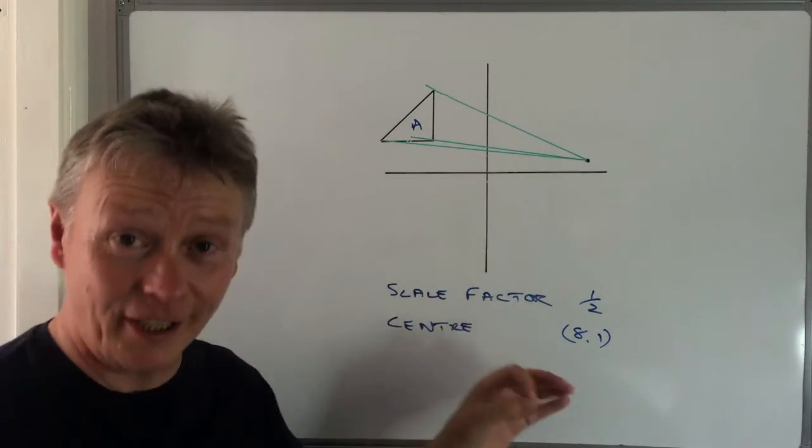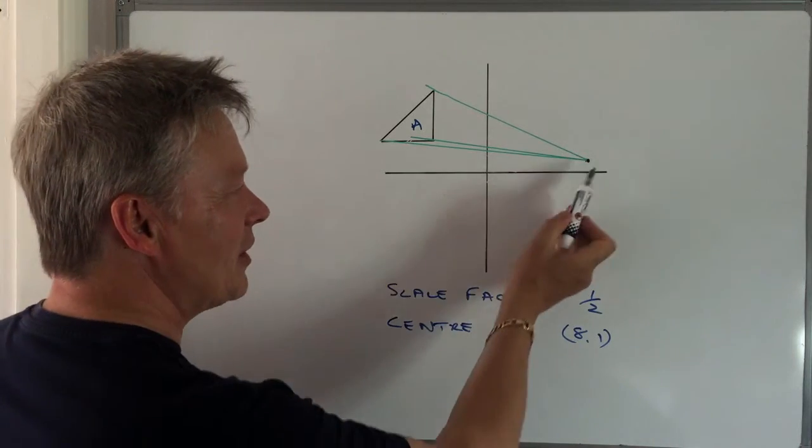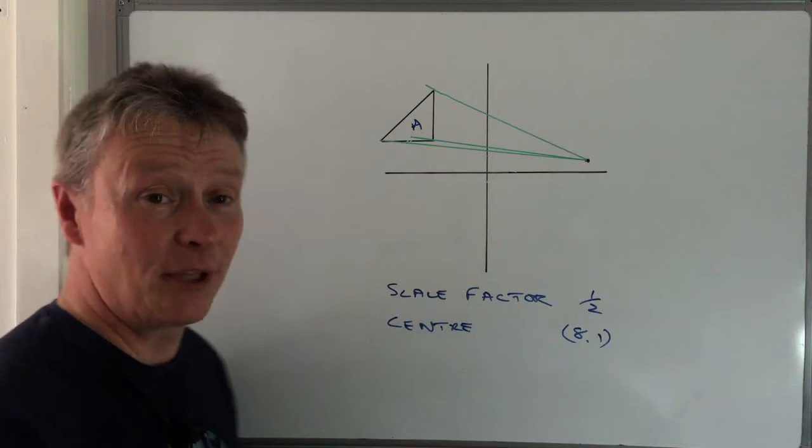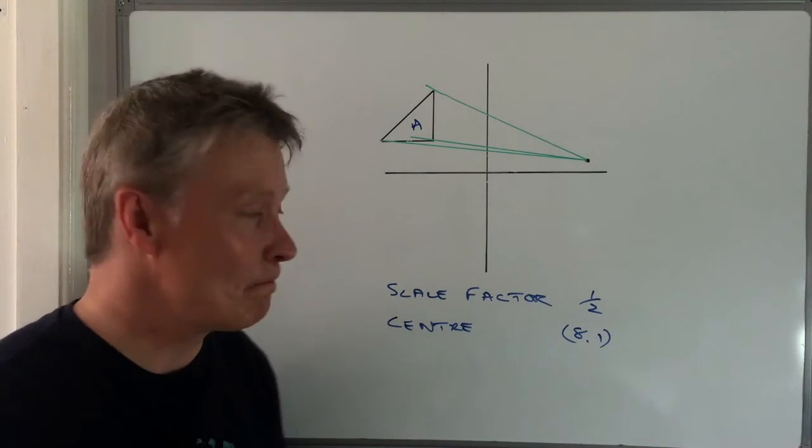it's a bit like standing there and shining a torch. And what you've got is these straight lines that go to the edge of the shape, because of course light travels in a straight line.